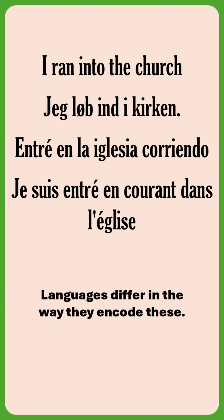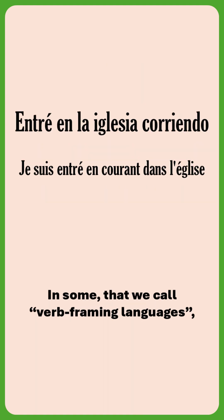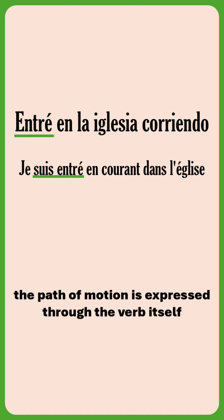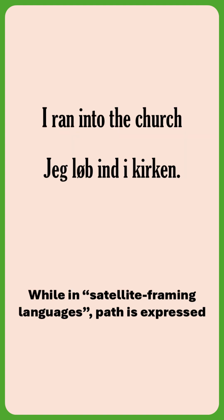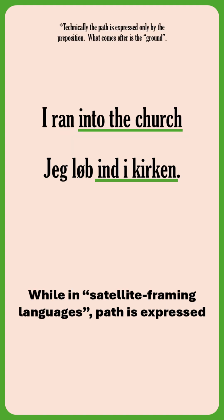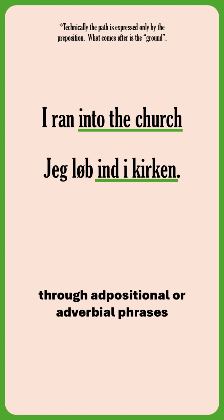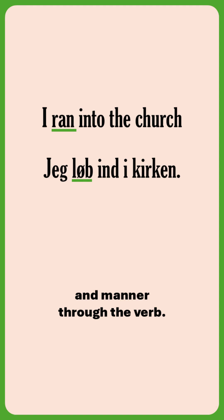Languages differ in the way they encode these. In some, that we call verb-framing languages, the path of motion is expressed through the verb itself, and manner through an optional adverbial. While in satellite-framing languages, path is expressed through adpositional or adverbial phrases, and manner through the verb.